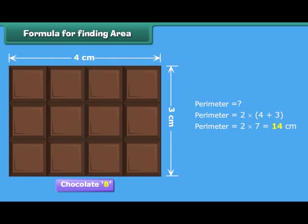Alternatively, perimeter is equal to twice the sum of the length and width.